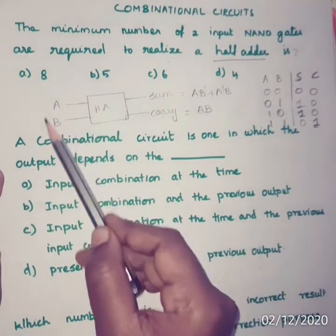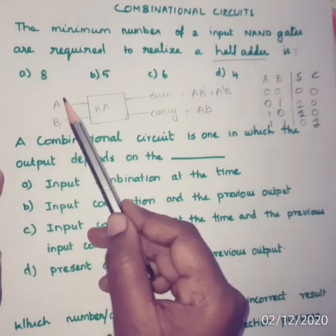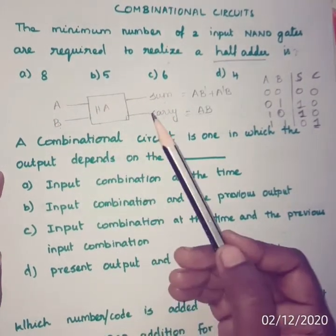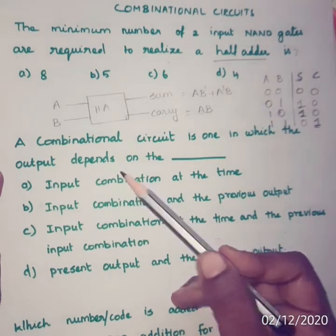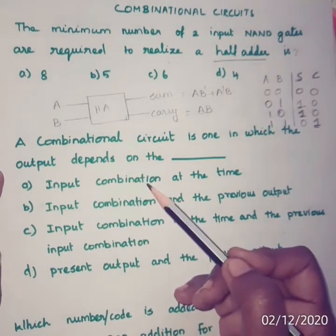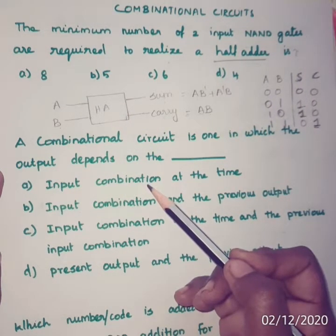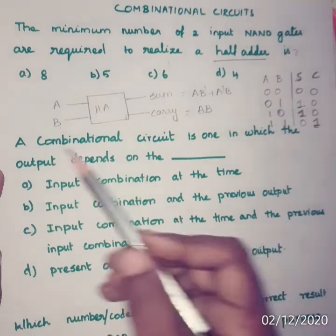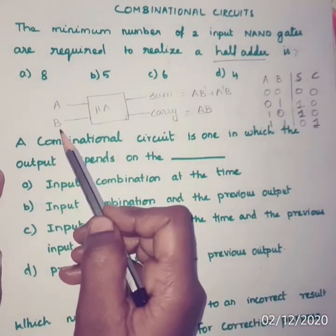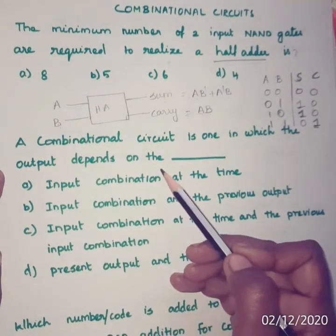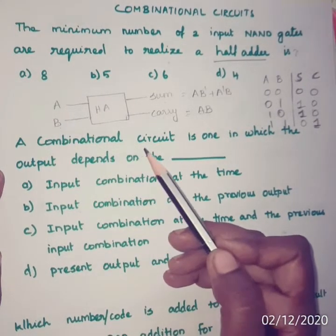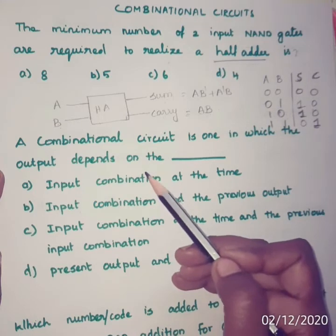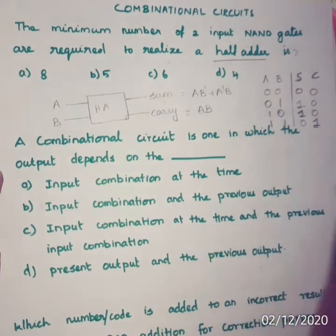In digital circuits, if we have N inputs, there are 2 to the power N possible combinations. Here there are two inputs, so 2 power 2, that is 4 possible combinations.